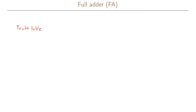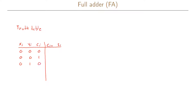The three inputs are xi, yi, and ci, and the two outputs are ci+1 and si. Enumerating the different inputs in the truth table gives us exactly eight different input combinations.